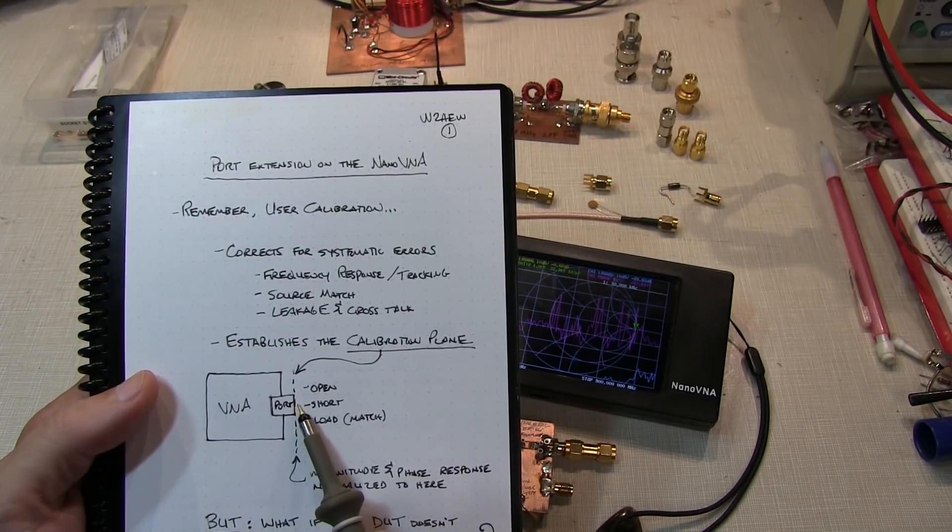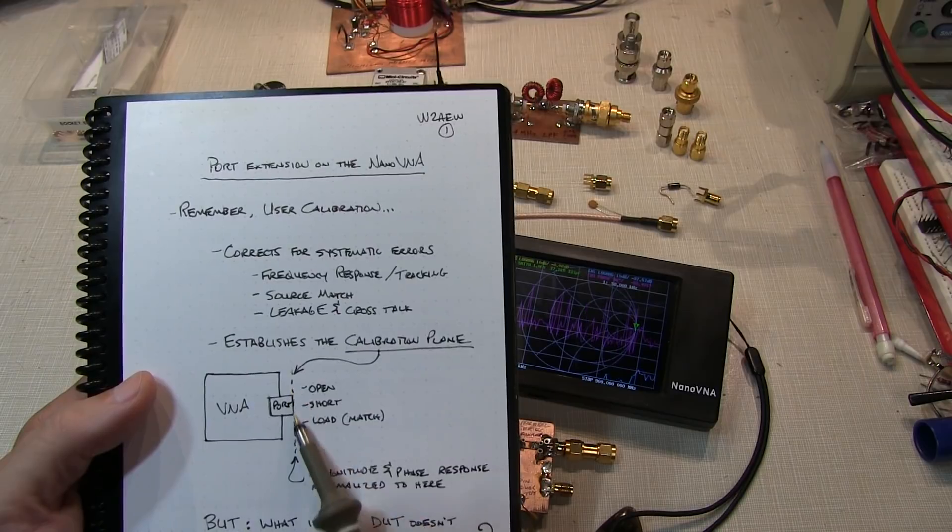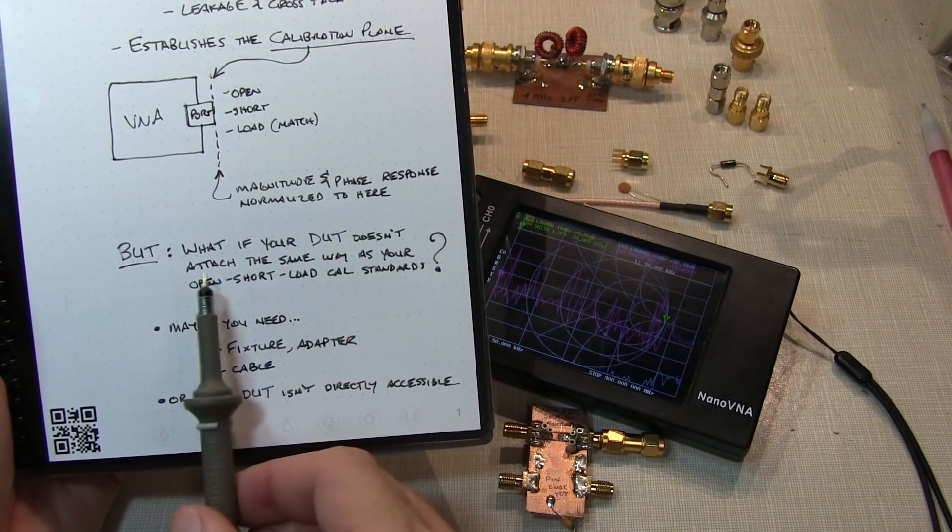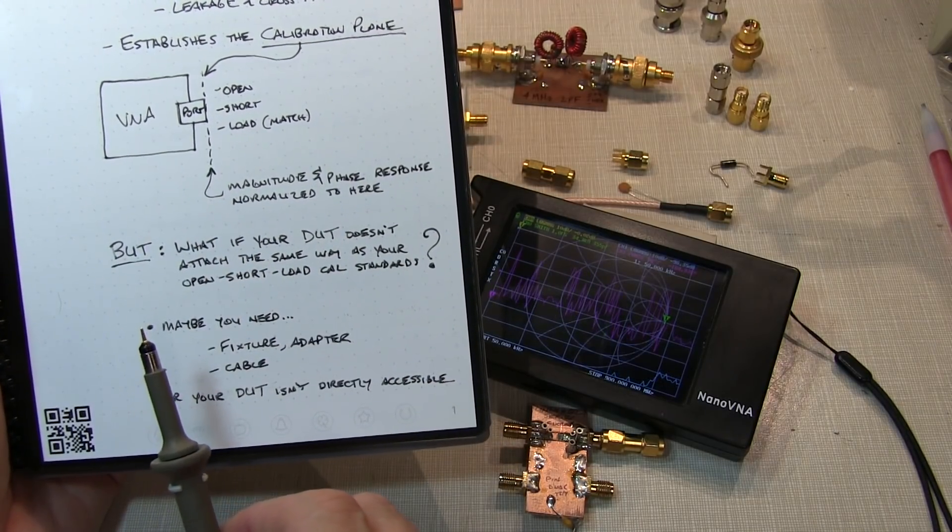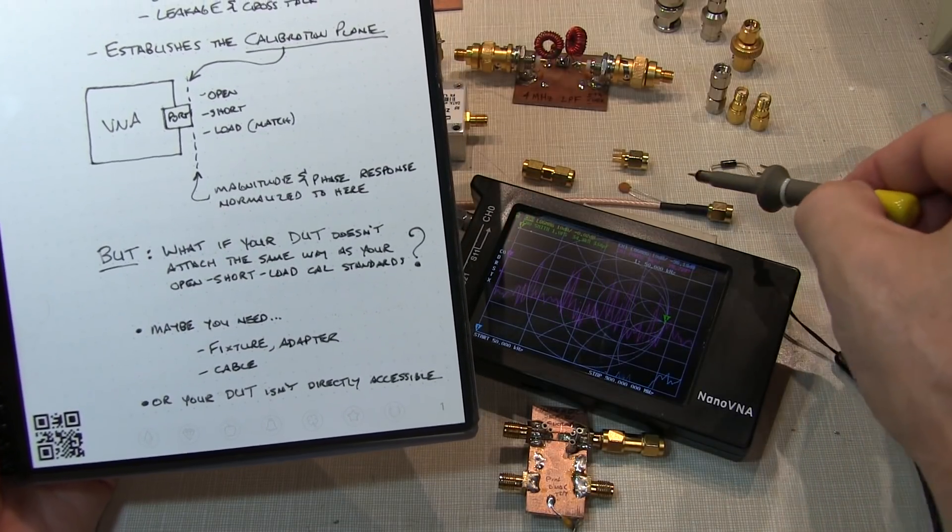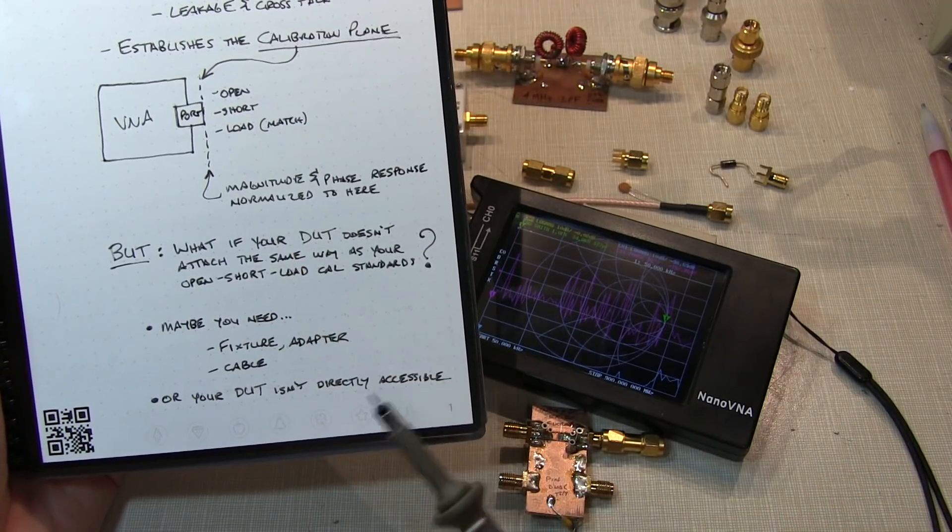But what if the device you're testing doesn't attach the same way as your open, short, and load standards that you use for calibration? Maybe you need some kind of a fixture, or maybe an RF adapter, or even a short length of cable to connect your device under test to the VNA.